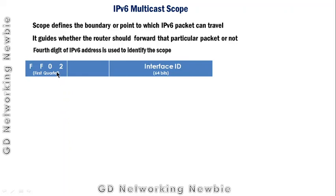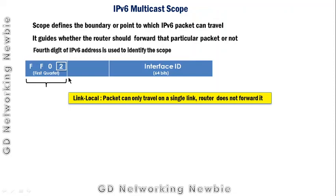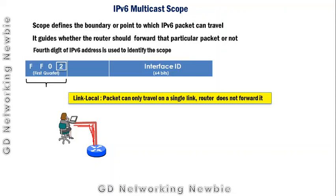The second IPv6 multicast scope has a fourth digit of 2. This means the scope for the multicast packet is link-local. Unlike interface-local, a link-local packet can leave the node but can only travel on a single link. The router does not forward it further — the packet remains within the local link.